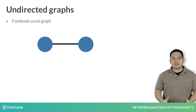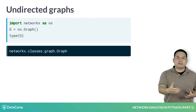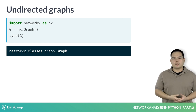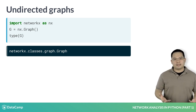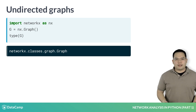If we explore this in the IPython terminal, you can instantiate an empty graph in NetworkX using nx.graph and ask for its type. Undirected graphs have the type graph.